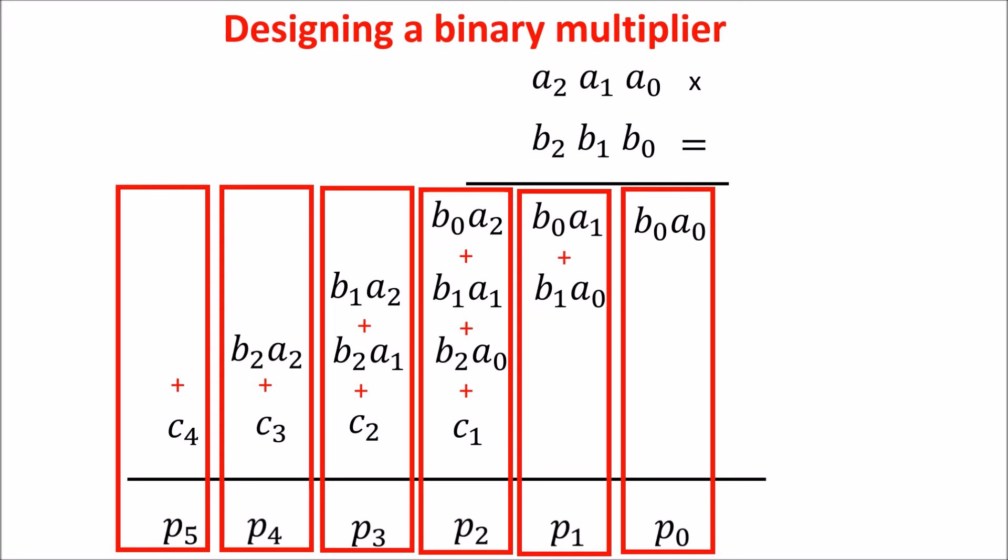You see that the product of 3-bit numbers is a 6-bit number. In general, the product of 2N-bit numbers is a 2N-bit number. The circuit we are going to build is for unsigned numbers.